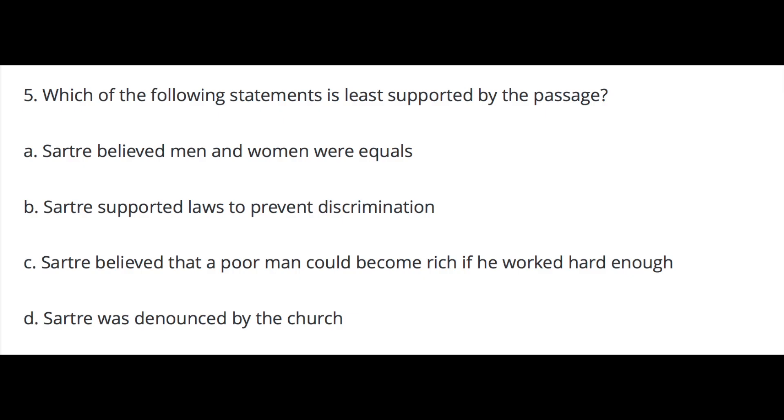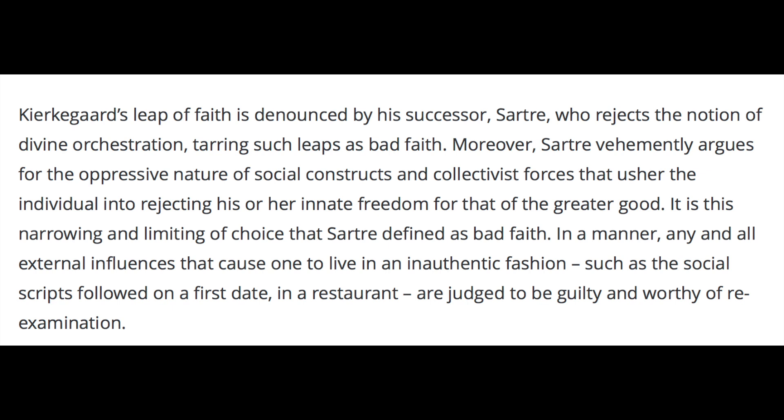The last question, number five — which of the following statements is least supported by the passage? — the correct answer is B: Sartre supported laws to prevent discrimination. This is a reasoning beyond the text question. The passage describes Sartre as an atheistic philosopher primarily concerned above all else with choice and freedom of choice. In paragraph three, it states: it is this narrowing and limiting of choice that Sartre defined as bad faith — any and all external influences that caused one to live in an inauthentic fashion are judged to be guilty. Be careful here, as this question asks for the least supported choice — the one with the biggest leap in logic or the lowest amount of evidence. The process of elimination works well here in coming to B as the answer with the most evidence against it.